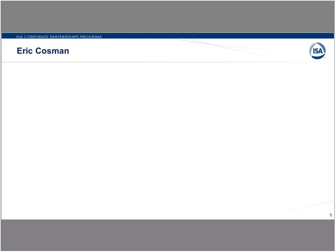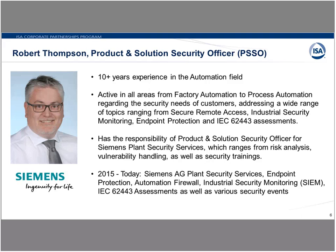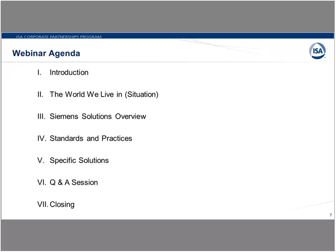Also joining us today is Robert Thompson, product and solution security officer with Siemens. Robert has over 10 years of experience in the automation field. He is active in all areas from factory automation to process automation regarding the security needs of customers, addressing a wide range of topics from secure remote access and industrial security monitoring to endpoint protection and IEC 62443 assessments. He currently has responsibility for Siemens plant security services, which ranges from risk analysis, vulnerability handling, and security trainings. Welcome, Robert. Now I will turn things over to Eric to go over our agenda and get started with today's webinar.